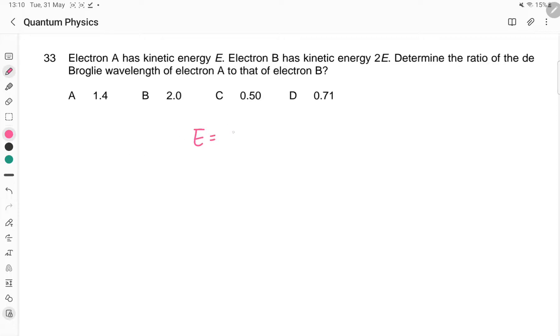The kinetic energy is equal to P squared over 2m. So P equals square root of 2mE. And the de Broglie wavelength equals h over square root of 2mE.